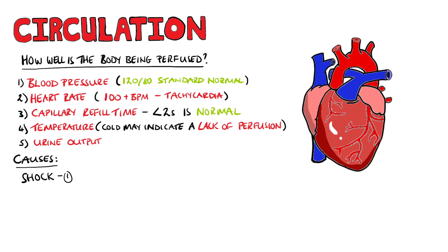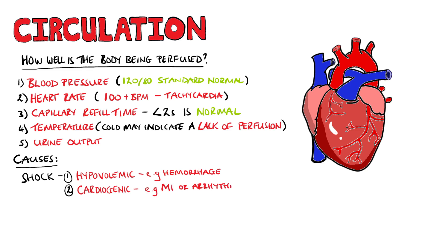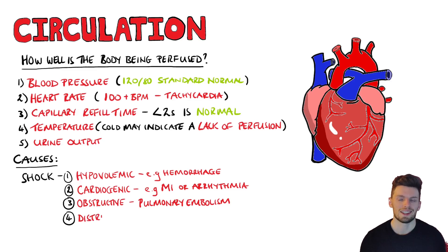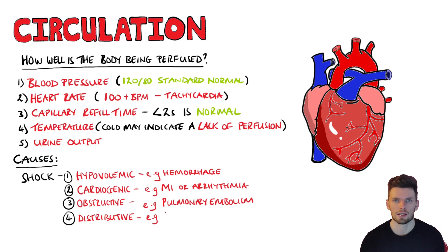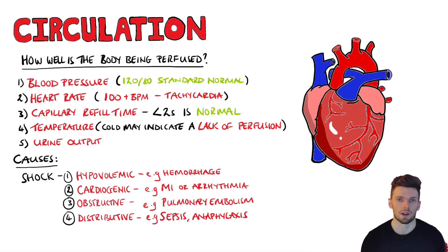The main causes of circulation failure involve shock. This can be hypovolaemic shock — for example, due to haemorrhage — cardiogenic shock from causes such as infarction or arrhythmia, obstructive shock seen with pulmonary embolisms, or distributive shock seen in sepsis and anaphylaxis. In surgical patients, always keep haemorrhage on your list of differentials.